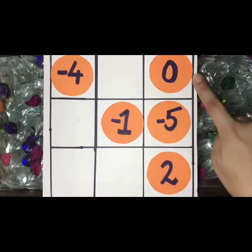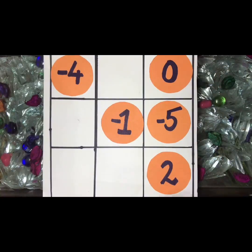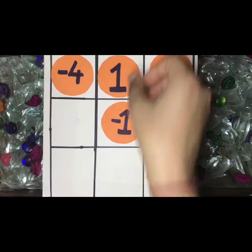Similarly, now I will complete this row. Minus 4 plus 0, answer is minus 4. To complete it I need 1. So minus 4 plus 1, the answer is minus 3.